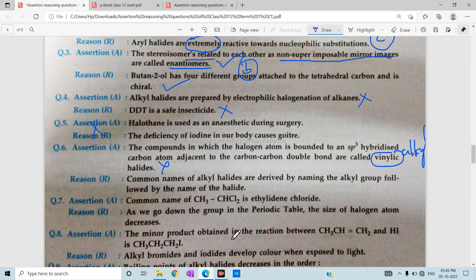The common names of alkyl halides are derived by the alkyl name followed by the name of the halide. It's called methyl chloride. This statement is called ethylene dichloride. After that, as the size increases, the answer is C part.